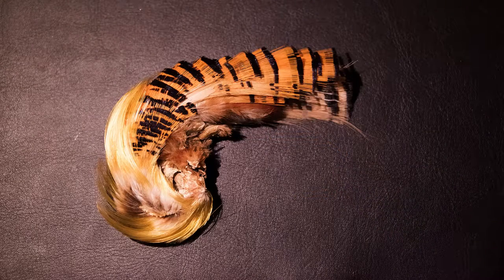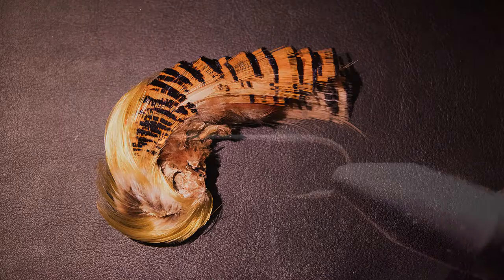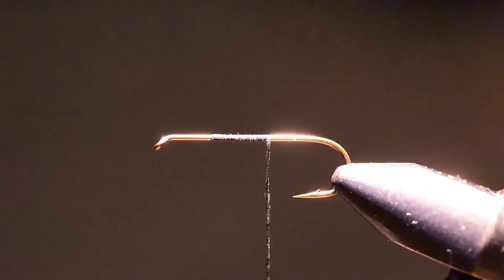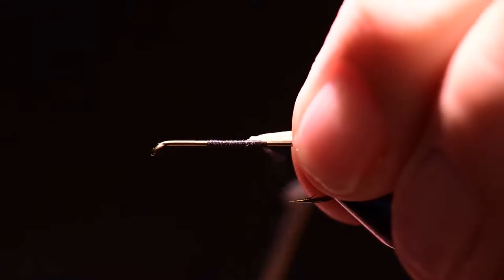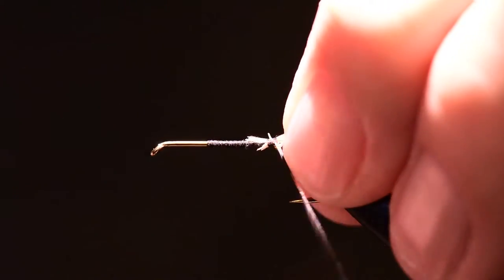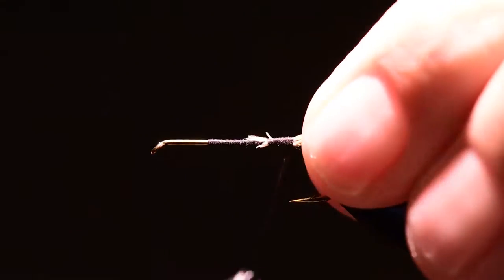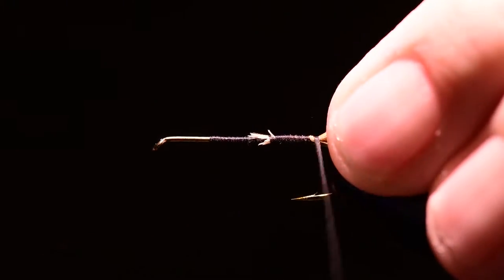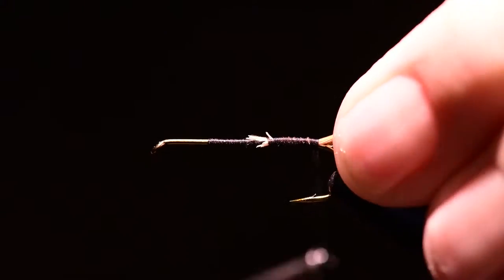Next I'm going to use a golden pheasant tippet feather and I'll clip off a bunch of barbs off one feather and I'm going to tie these in to create the tail on this fly. The tail should be about one and a half to two times the gape of the hook.